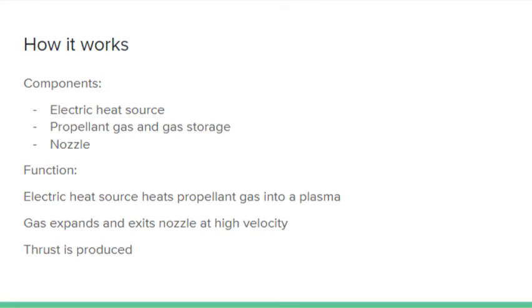The components of an electrothermal rocket generally consist of some sort of an electric heat source, a storage tank for the propellant gas and the gas itself, as well as a nozzle to direct the exhaust.